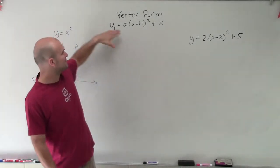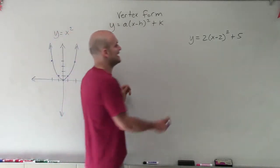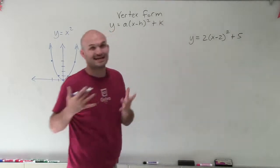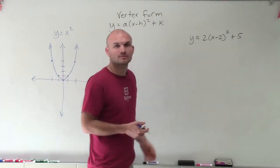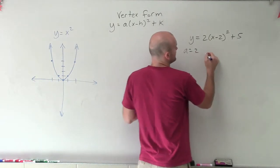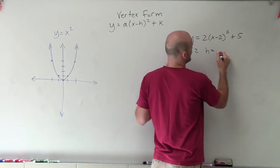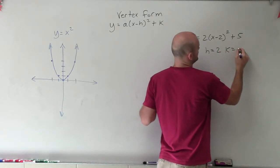So to do this, what we need to do is we have vertex form is y equals a times x minus h squared plus k. And what we want to do is understand what the transformations are. So I'm going to say a equals 2, h equals positive 2, and k equals 5.